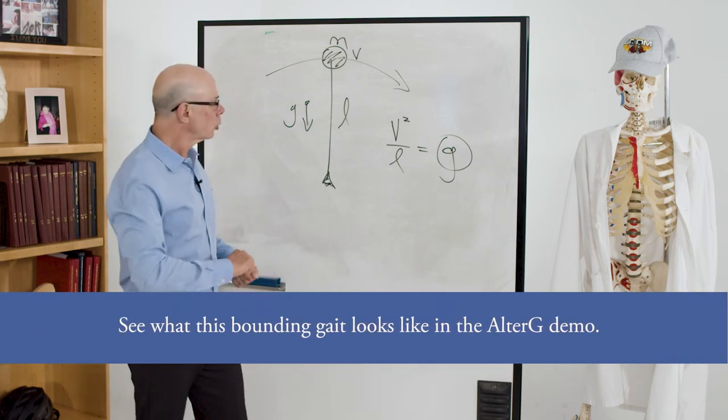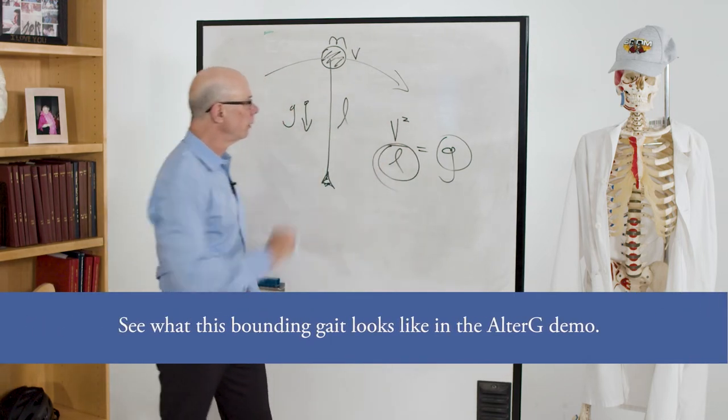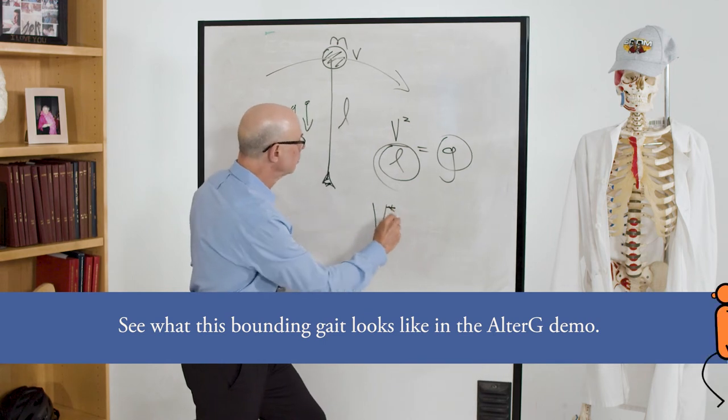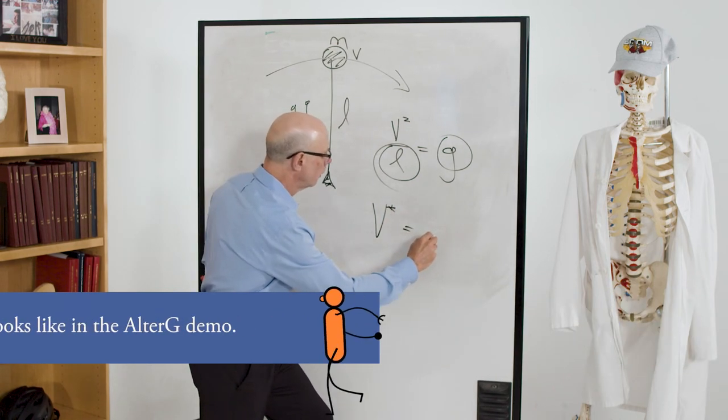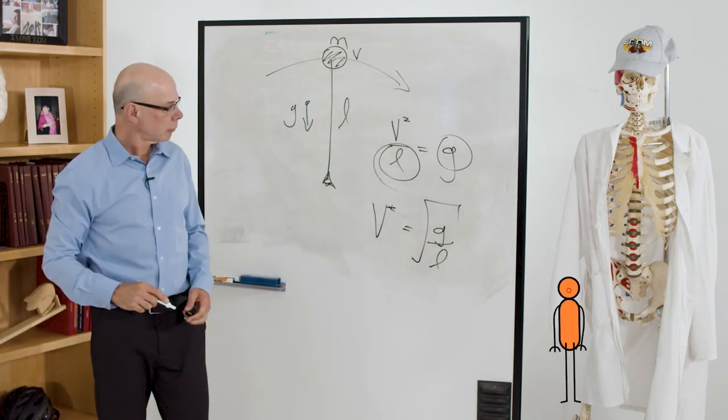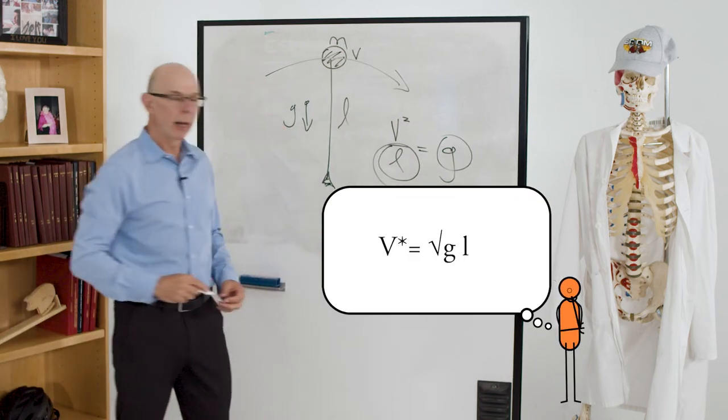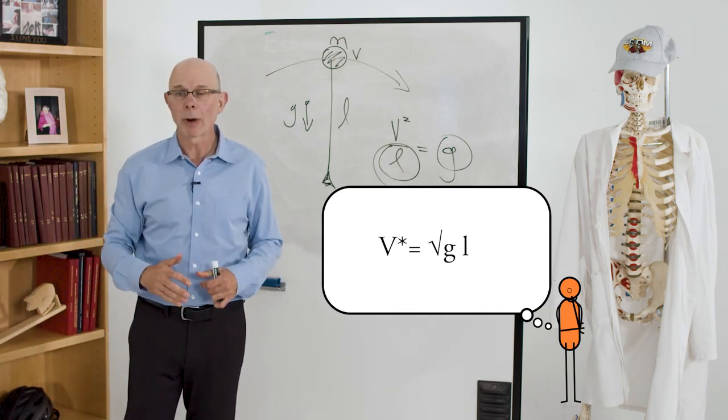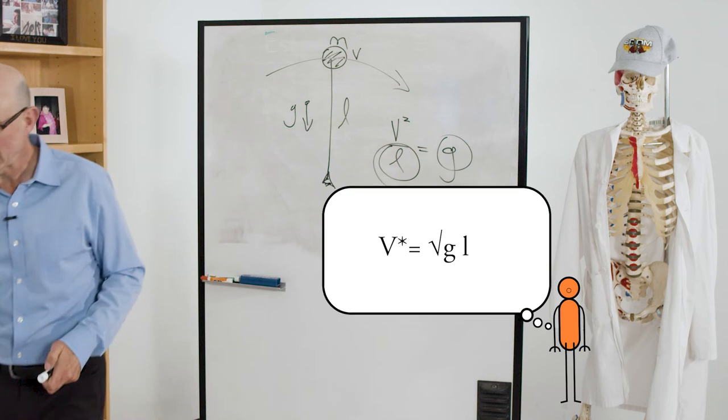But we also see the peak speed, so that speed special is equal to the square root of G over L. So this speed at which you transition from walking to running under the influence of gravity is also affected by leg length.